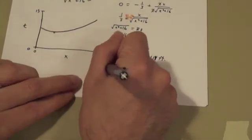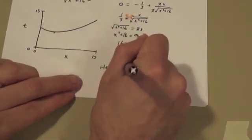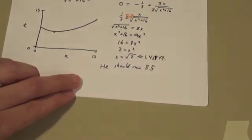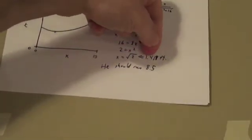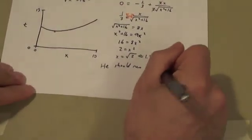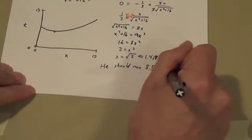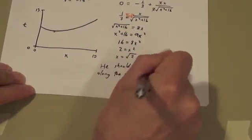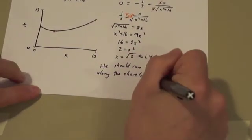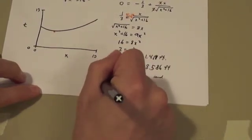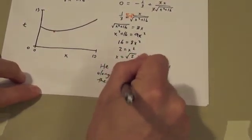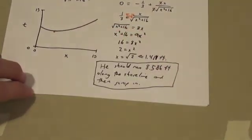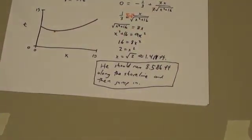So he should run 8.586 feet along the shoreline and then jump in. And that's it.